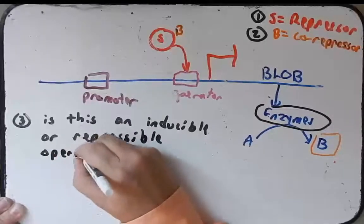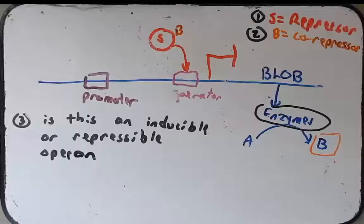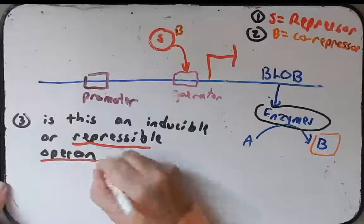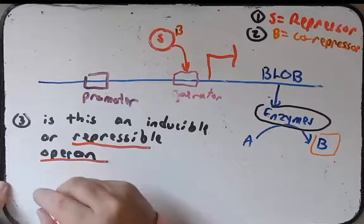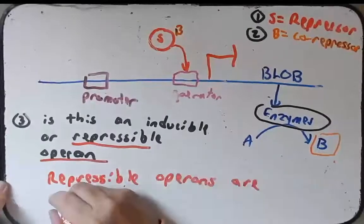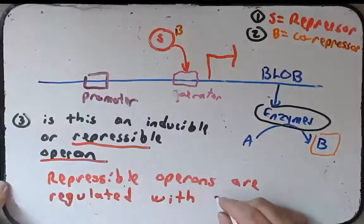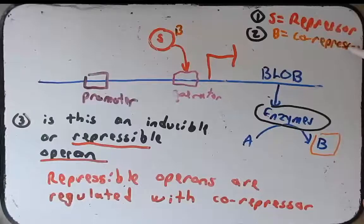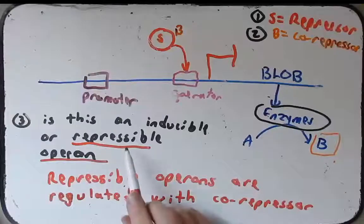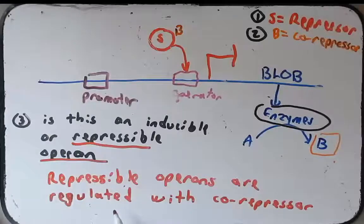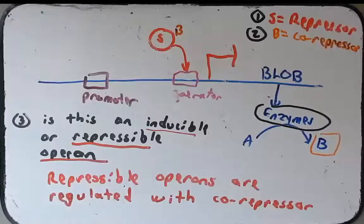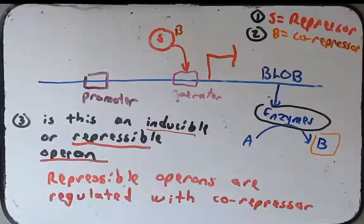And this will be the easiest of the three questions to answer. And that is because co-repressors are only found in repressible operons. So this must be a repressible operon. And the reasoning for that, repressible operons are regulated with co-repressors. So all that trouble we went through to determine that B is a co-repressor helps us answer this question. Co-repressors help regulate repressible operons. Our answer is repressible operons.